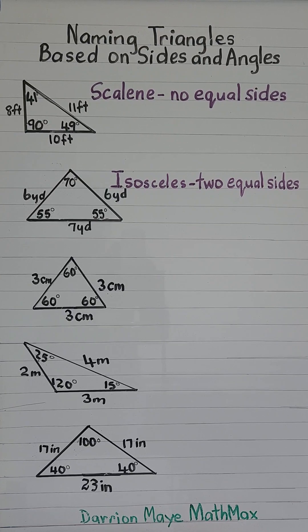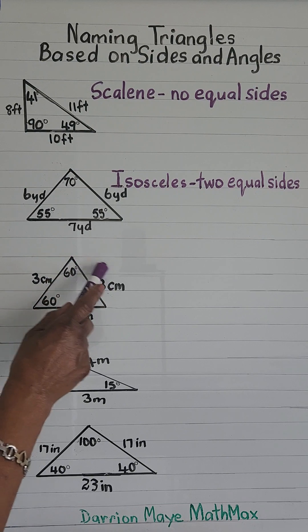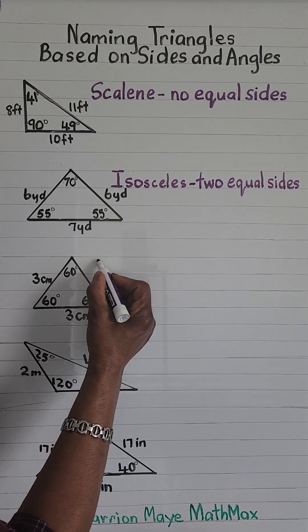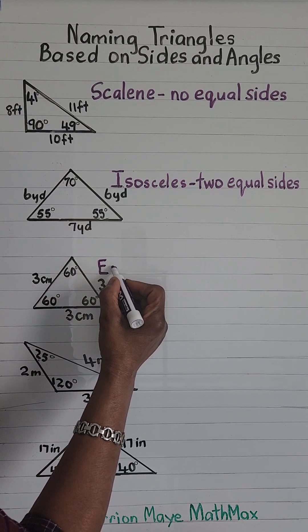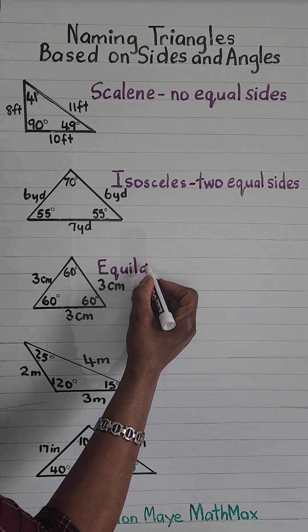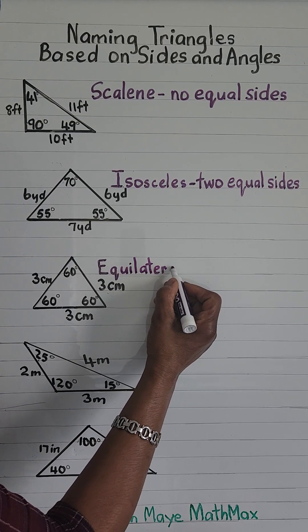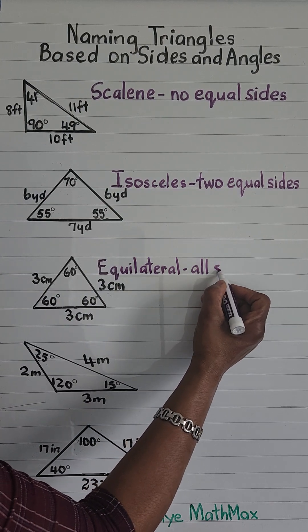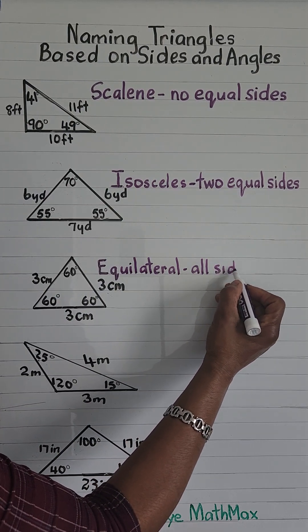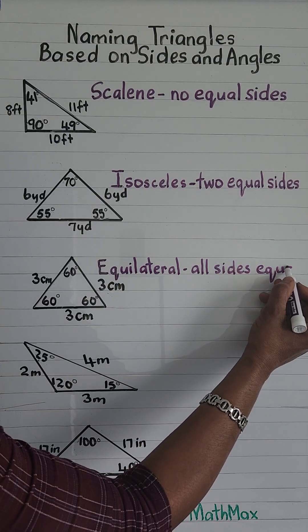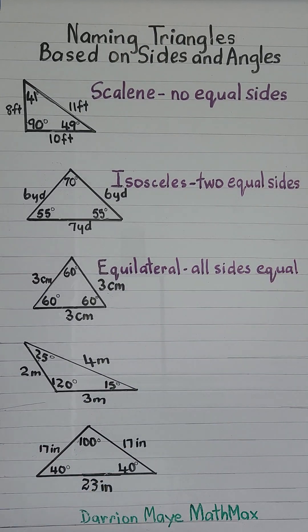Next we have an equilateral triangle. An equilateral triangle has all sides equal.